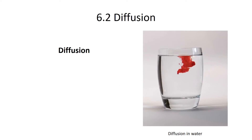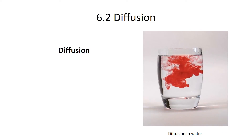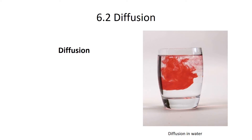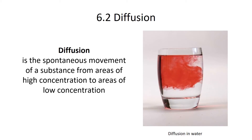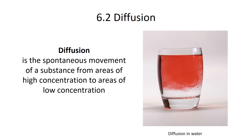Let's begin with diffusion. You can see it on the right — as that dye enters the water, it's spreading out. Diffusion is the spontaneous movement of a substance from areas of high concentration to areas of low concentration. When that dye hits the water, it's very concentrated, and then it spreads out until it reaches equilibrium. In effect, the dye is going down a concentration gradient.